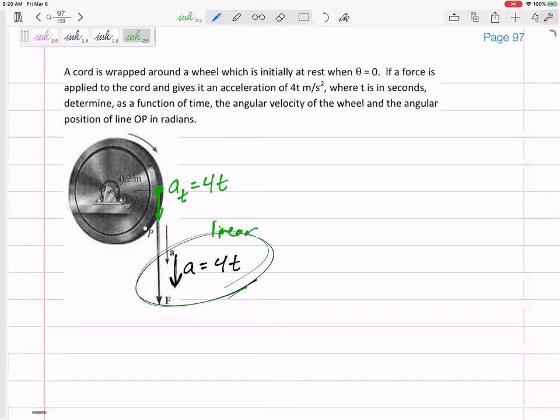If I know the tangential acceleration on the edge of the wheel and I want to know the angular, this is kind of, I like to think about it as kind of jumping from linear to angular. How can I kind of jump from linear to angular? A equals r alpha.